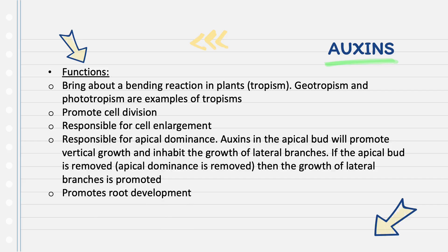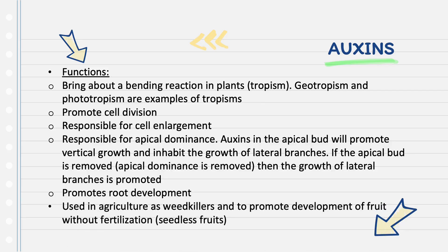Auxins promote root development. They are also used in agriculture as weed killers and to promote the development of fruit without fertilization, also known as seedless fruits.